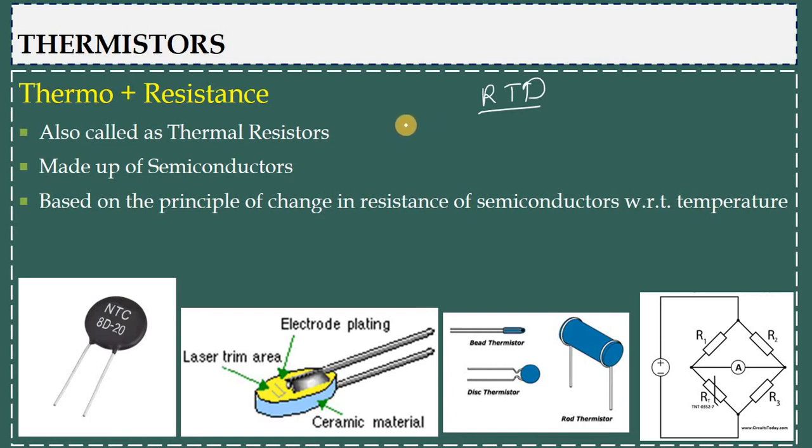So let's see what is it - thermal resist, thermistor, thermal resistance. Thermo plus resistance, we can say that's why these are called as thermal resistors. Basically these are made up of semiconductors, but in case of RTD what we are using are the metals. Here also the same phenomena - the resistance of semiconductors is also dependent on the change in temperature.